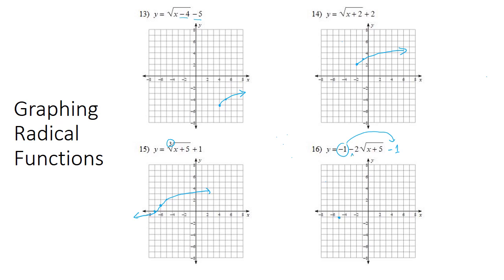This negative right here means instead of going to the right and up, we're going to go right and down. And instead of going right 1, down 1, we're going to go right 1, down 2 because of the dilation. And that's it.